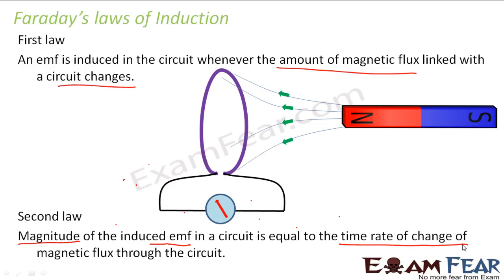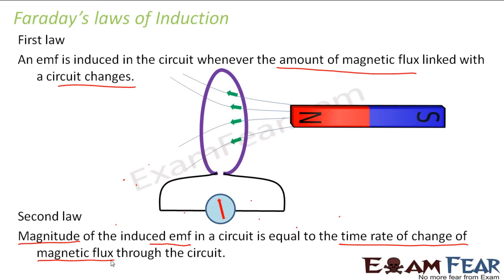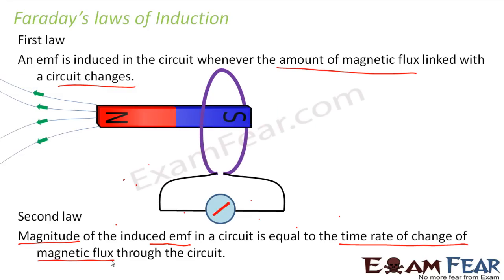So Faraday's law told us that whenever there is a change of flux linked with the circuit, there is an induced EMF, and the magnitude of the induced EMF is given by the rate of change of magnetic flux through that circuit.